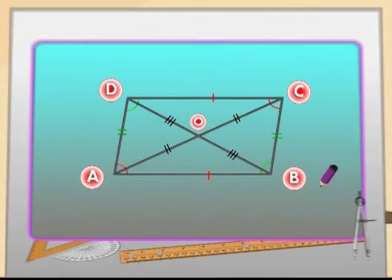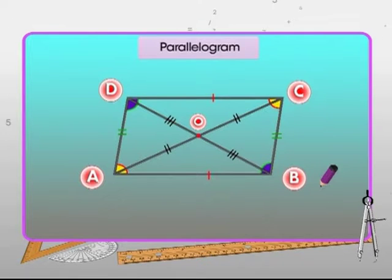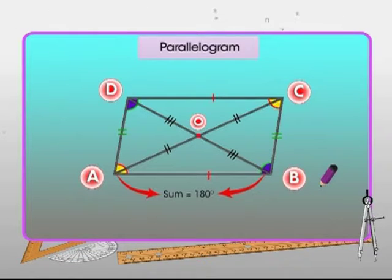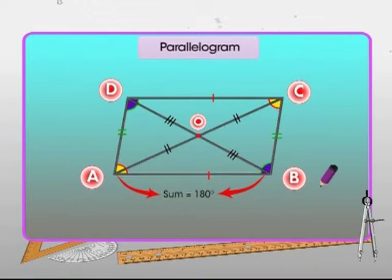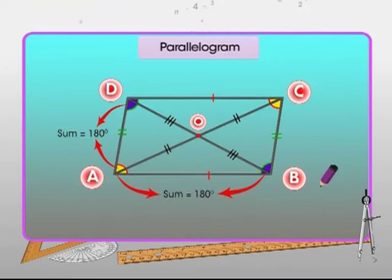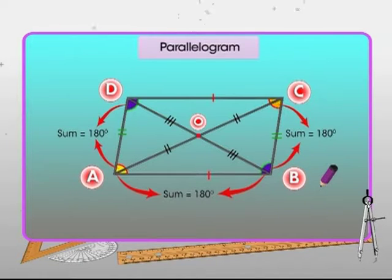Adjacent angles of a parallelogram are supplementary to each other. In the figure, angle A plus angle B equals 180 degrees, angle A plus angle D equals 180 degrees, angle B plus angle C equals 180 degrees, and angle D plus angle C equals 180 degrees.